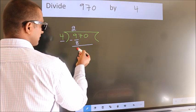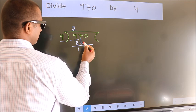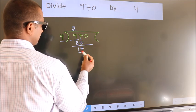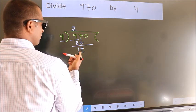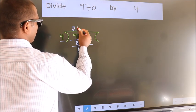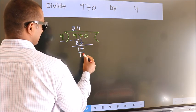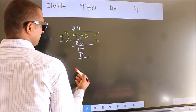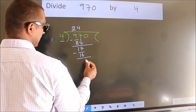After this, bring down the beside number. So 7 down. So 17. A number close to 17 in 4 table is 4 4s 16. Now we subtract. We get 1.